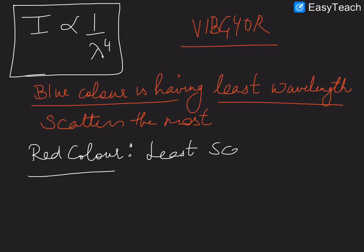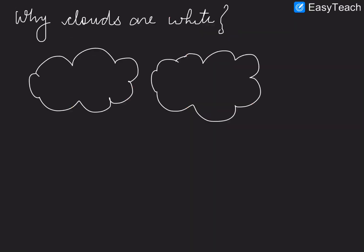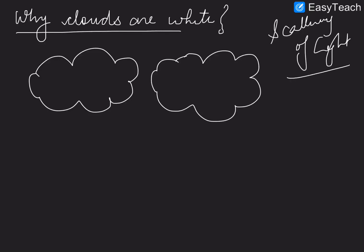Because red light scatters the least, danger signals are always red — they can be seen from a greater distance. This is also the reason the sun appears red during sunrise and sunset, as the light has to travel a longer path through the atmosphere at those times. Finally, a question for you: why are clouds always white? You can answer this on the basis of scattering of light.